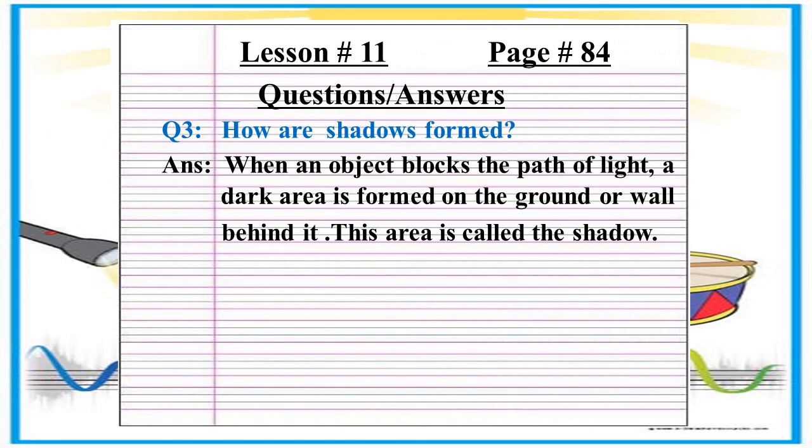Question number 3 is: How are shadows formed? Answer is: When an object blocks the path of light, a dark area is formed on the ground or wall behind it. This area is called the shadow.